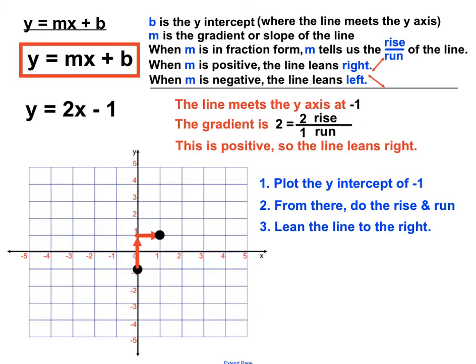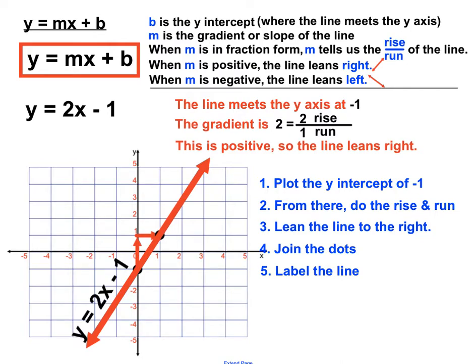So I want the line to lean to the right. So I'll put another blob there. I've risen 2 and I've run 1. And all I do now is to join the dots and label the line. The line rule was y equals 2x minus 1. So we'll put that on there to show that all the points on that red big arrow are following that rule. y equals 2 times whatever x is, take away 1.